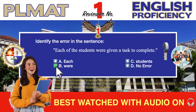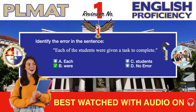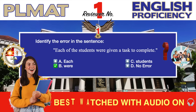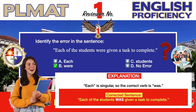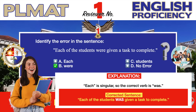The correct answer is B. The error in the sentence is the plural verb 'were.' 'Each' is singular, so the correct verb is 'was.' The correct sentence should read: 'Each of the students was given a task to complete.'